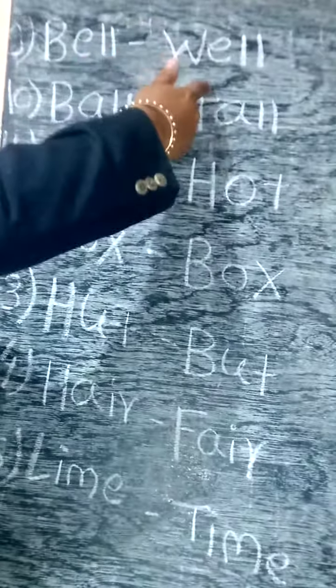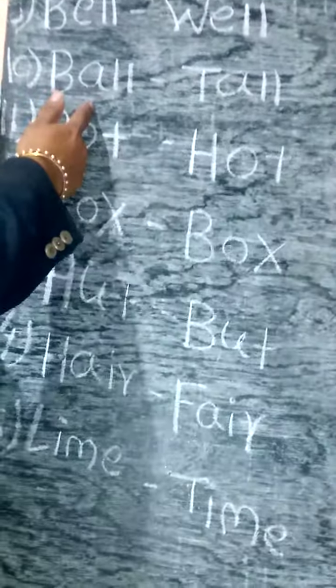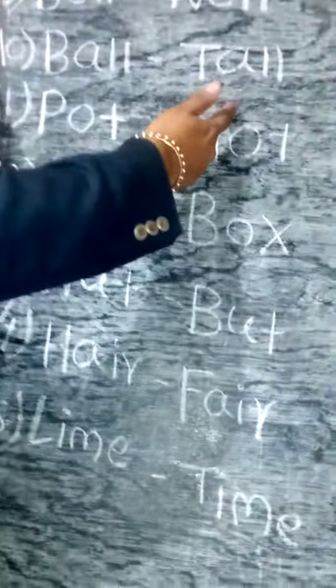Bell, well. Bell means ganta. Well means weep. Ball, tall. Ball means chendu. Tall means uncha.